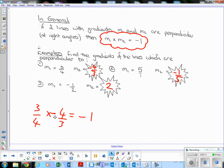So 3 quarters times negative 4 over 3 would be negative 12 over 12, which would be negative 1. So basically take your gradient, flip it upside down, change the sign. So 3 quarters, flip to be 4 thirds, change the sign, negative 4 thirds.